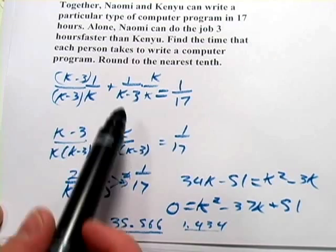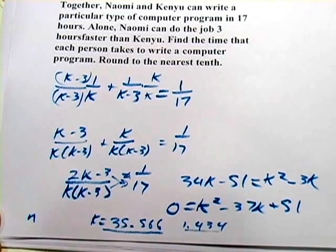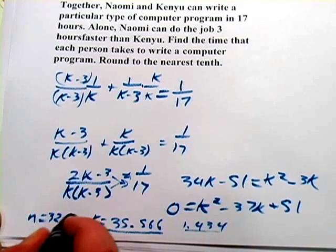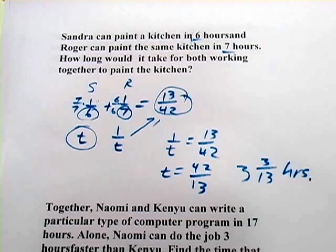Naomi, of course, is just three hours faster. So this is K, and Naomi would be K minus 3 or 32.566. That's how long it takes each of them to do the job alone. All right, let's look at one more. That's enough of the work problems.